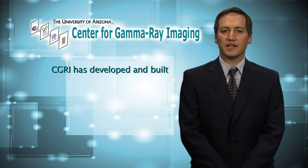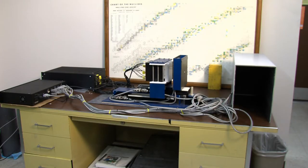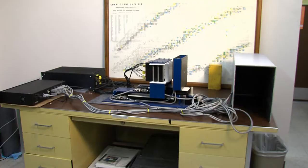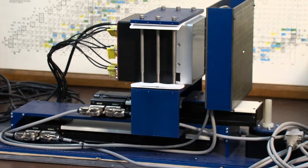CGRI has developed and built four adaptive imaging systems, starting with the prototype adaptive imager designed and built in 2006. This system was used to demonstrate the potential advantages of adaptive imaging over static systems in terms of task performance.